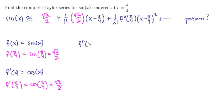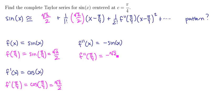Now let's do a second derivative. The derivative of cosine is negative sine of x. If we evaluate this at π/4, we're going to have f double prime at π/4 equal to negative √2 over 2. We'll stick that right here.